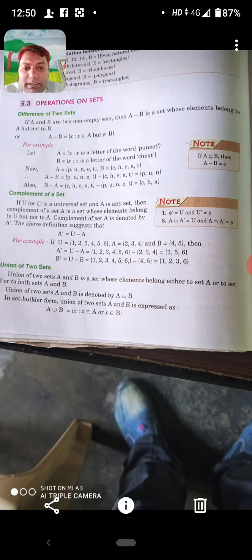Here B is equal to 4, 5 so B complement hooga U minus B. U may say set U may say saare elements B ke nikala dhenge, bache elements is called B complement or complement of a set 1, 2, 3, 6.